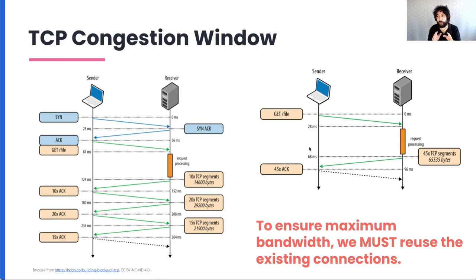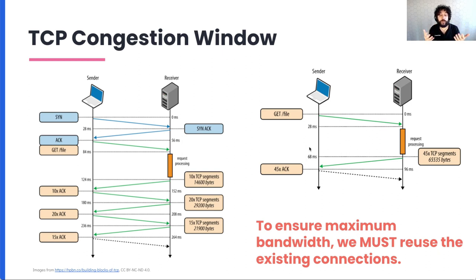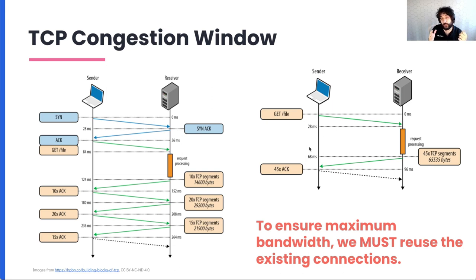The congestion window grows over time, and at some point, using algorithms, it stabilizes. What is important is that if my socket has been open for a while, the congestion window is higher, and because it's higher, we can send a lot of data before needing an ACK. You can see that with a bigger congestion window, we can send all our data without receiving an ACK from the sender, which actually reduces the latency quite a lot.